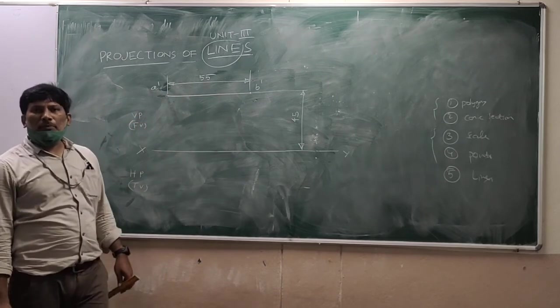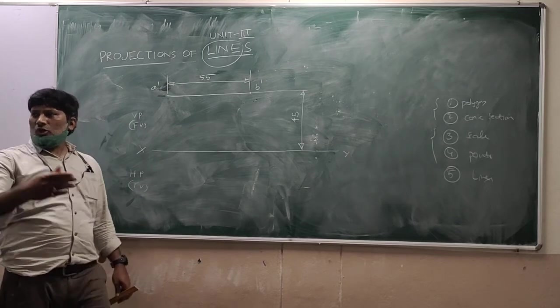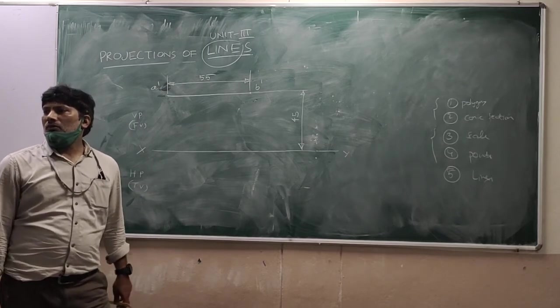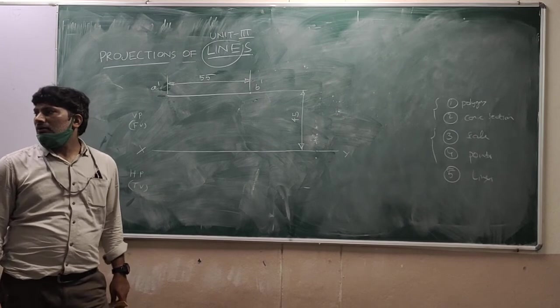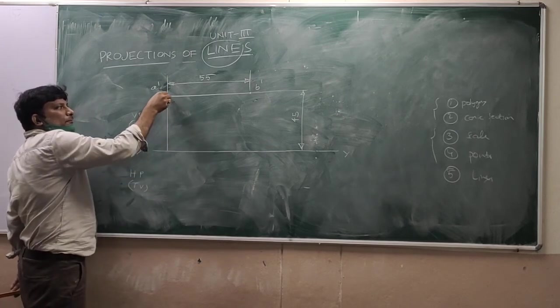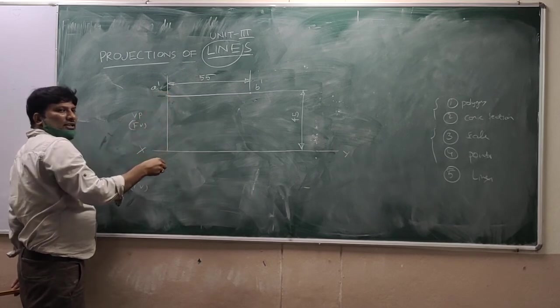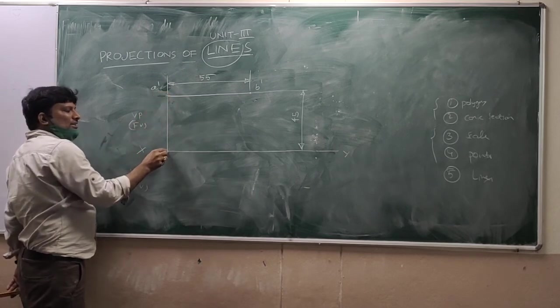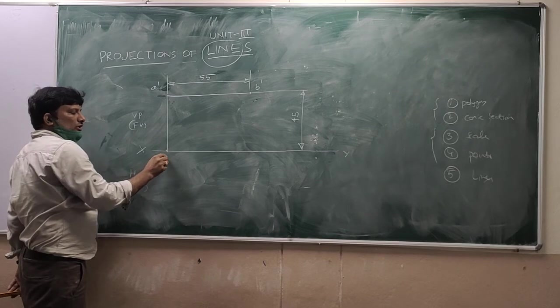Now where we will get the top view A? There is no distance in front. We will not be given. So obviously, on the reference line XY. Draw from the particular point A dash, that is the vertical projector line. It will be intersecting the reference line XY. So denote with A.